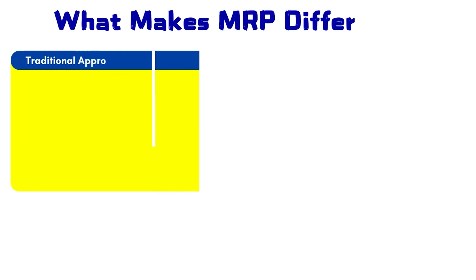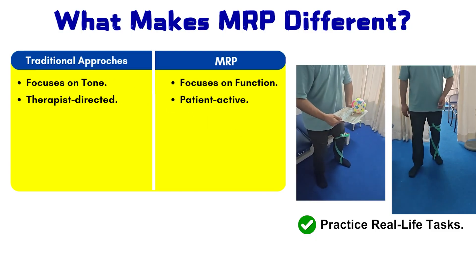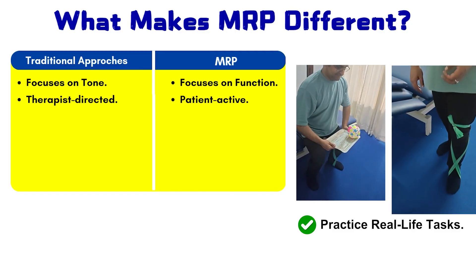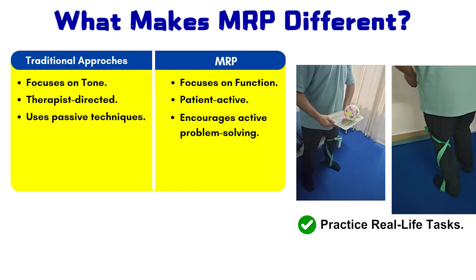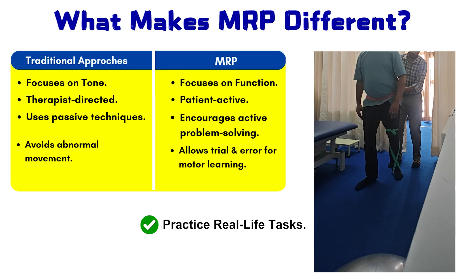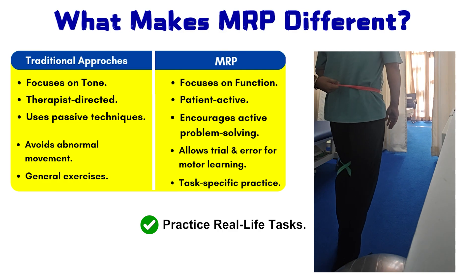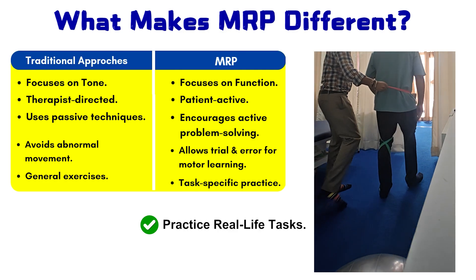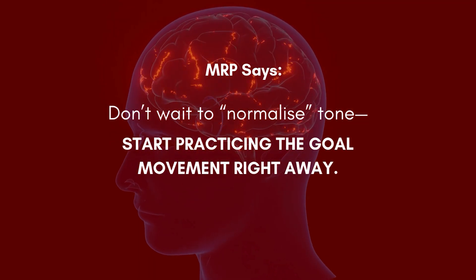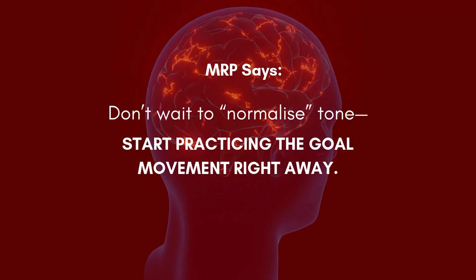Motor relearning program, or MRP, focuses on functional tasks from day one. In traditional methods, therapy is therapist-directed, whereas in MRP it is actively done by the patient. Other approaches use passive techniques, while MRP encourages active problem-solving. Other therapies avoid abnormal movement, but in MRP we allow trial and error for motor learning in a task-specific way. MRP says don't wait to normalize the tone — start practicing the goal movement right away, which makes it different from others.